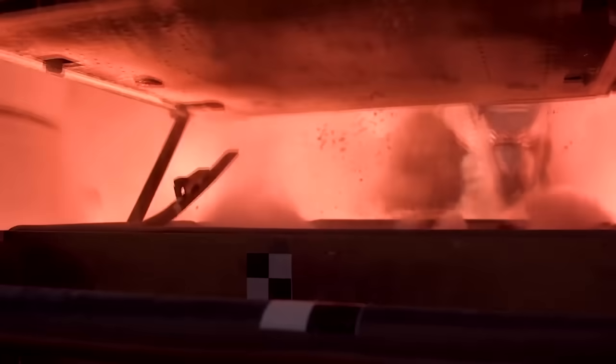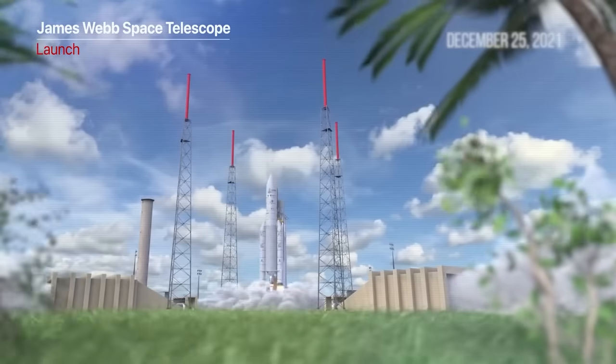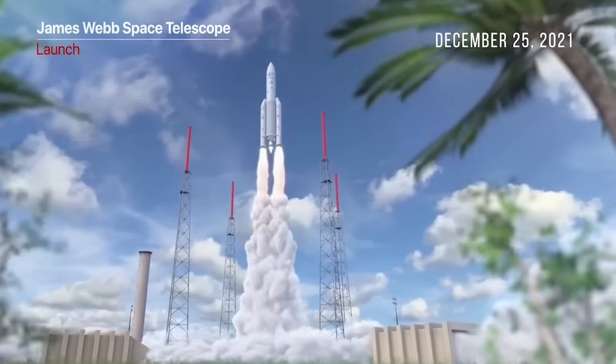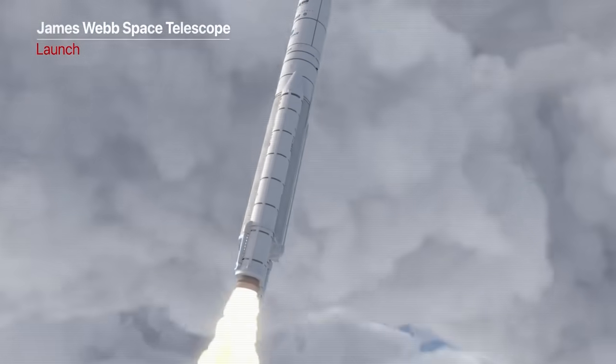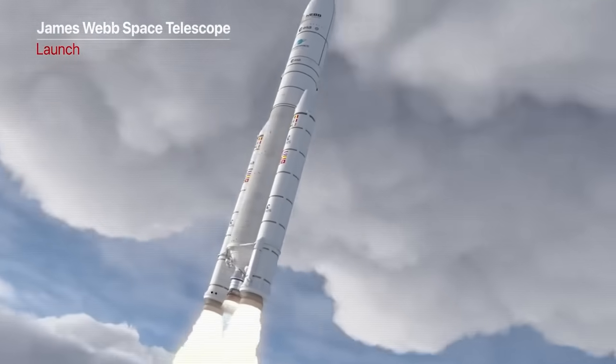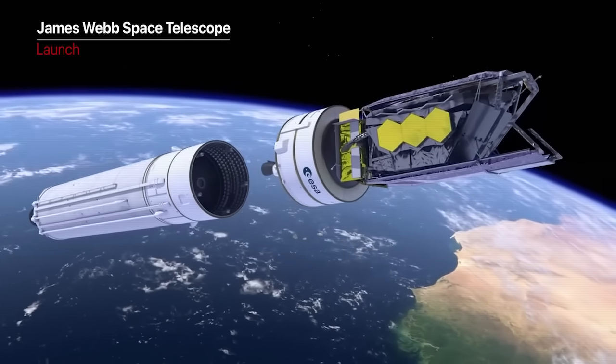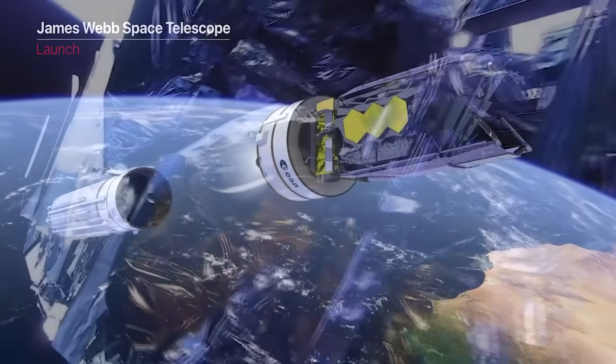The James Webb was launched on December 25, 2021. Within a month, the telescope reached its orbit 1.5 million kilometers from Earth, or about 900,000 miles from Earth.